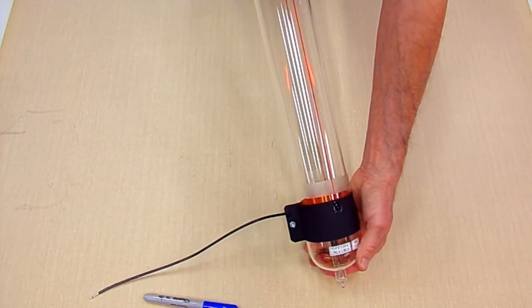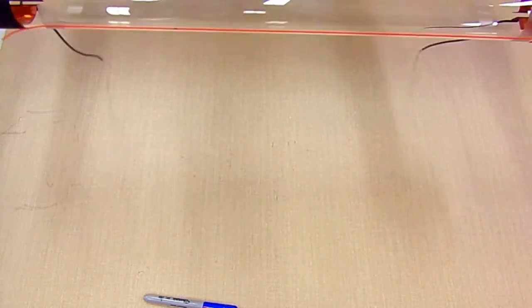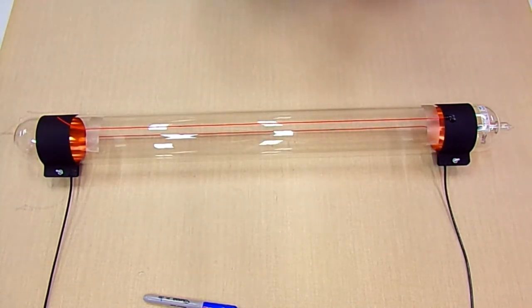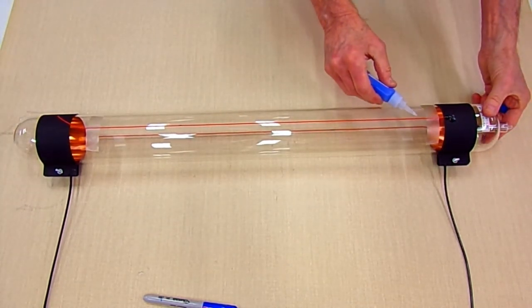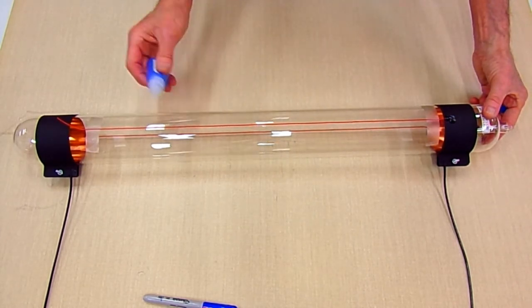Now inspect the tube to make sure that the wires are lined up parallel with each other on opposite sides of the tube. When you are satisfied that everything is correct, take some more of the adhesive and run a small amount of it along the edge of the wire to affix the wire in place.